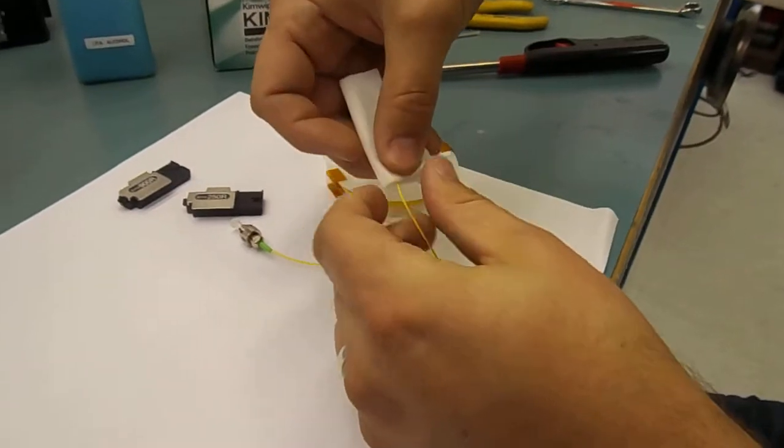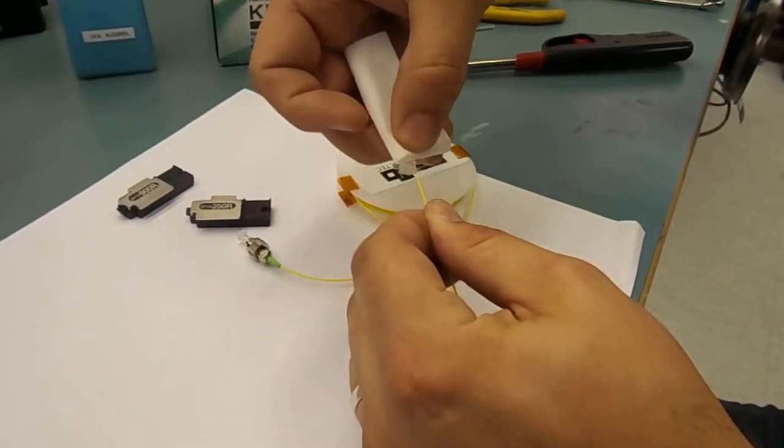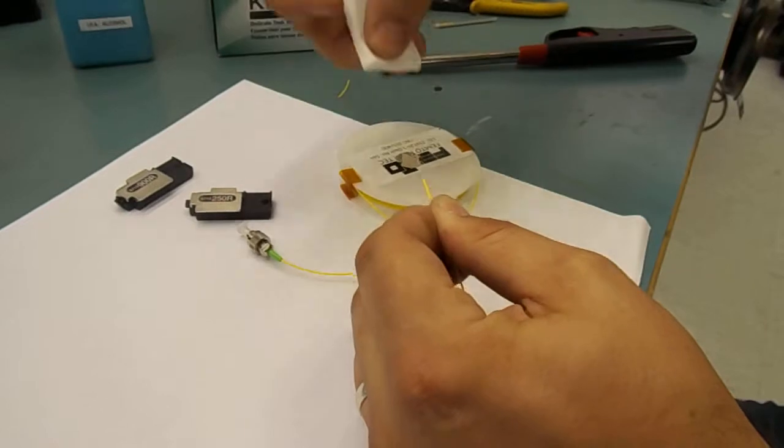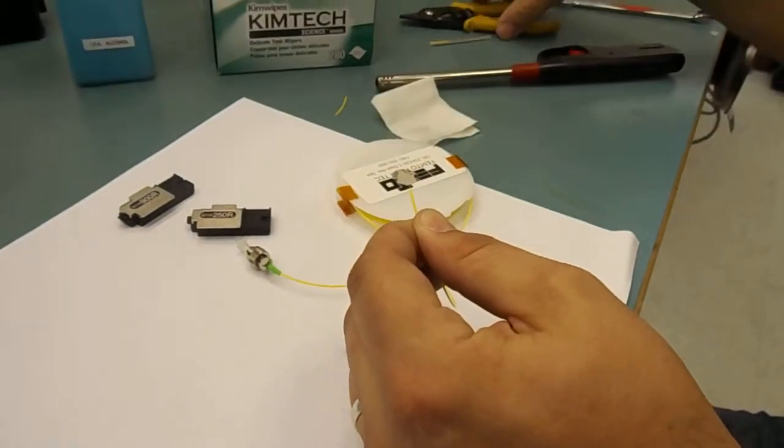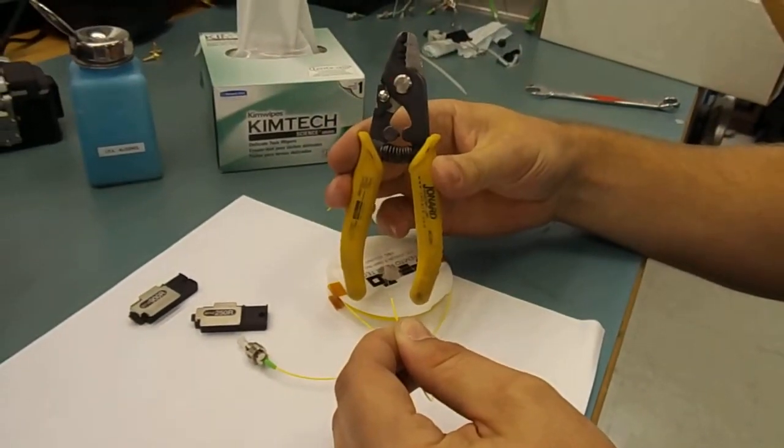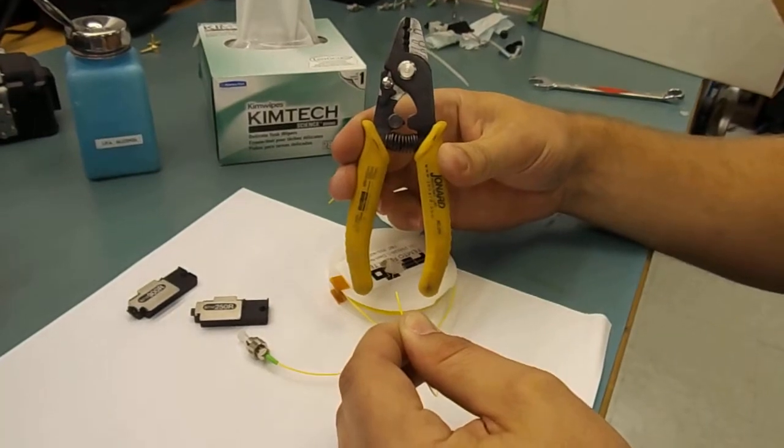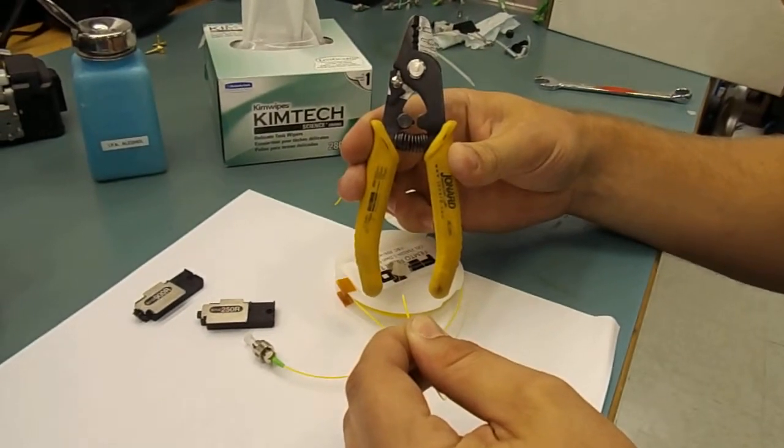And then after the acrylate is stripped off, you still clean the fiber. Now to strip that, you just use the old fashioned wire stripper type of device. Mechanically, yep. Didn't have to burn it. Nope, for acrylate.